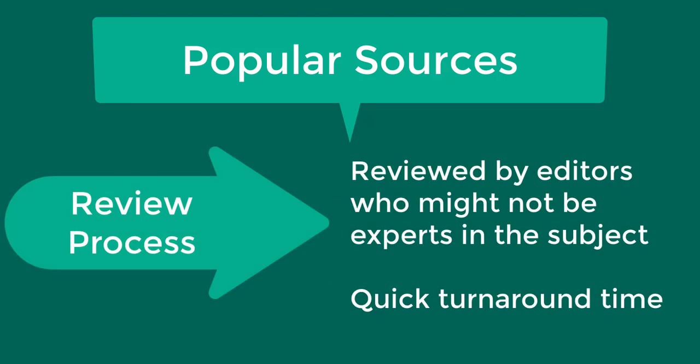The review process for popular articles is significantly less rigorous than for scholarly articles. Popular articles may be reviewed by editors who may not have special knowledge of the subject matter. Because popular articles include news and magazine articles, the writing and review turnaround time is frequent and may be daily, weekly, or monthly. This is an important distinction from scholarly articles, which require much more time to be reviewed by experts and edited before publication.